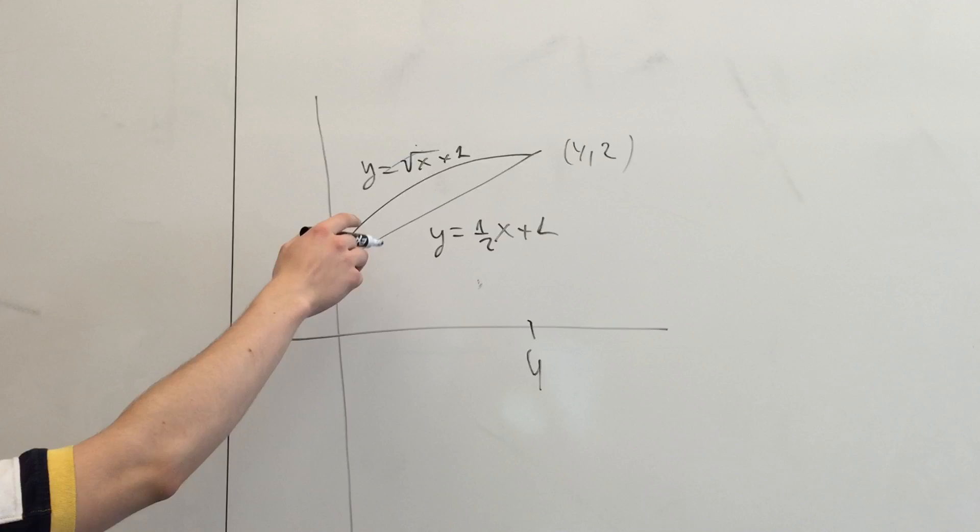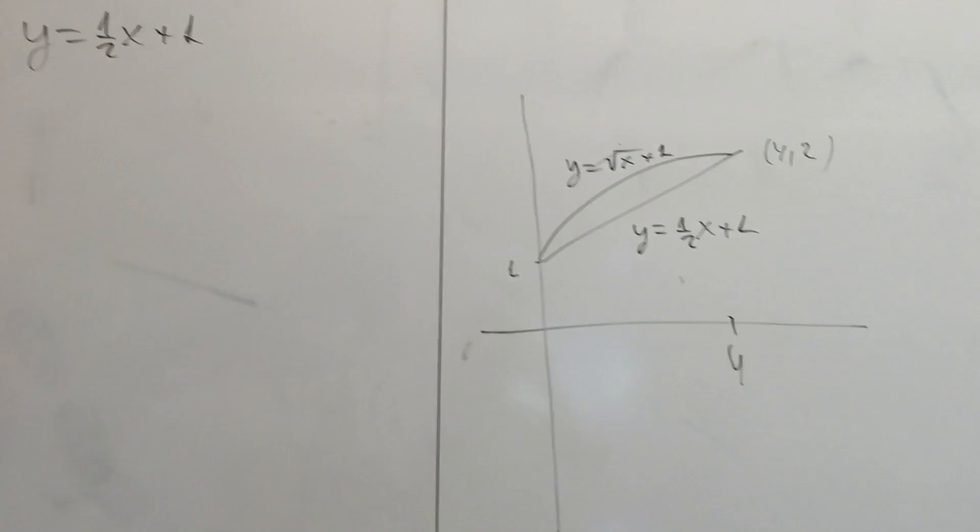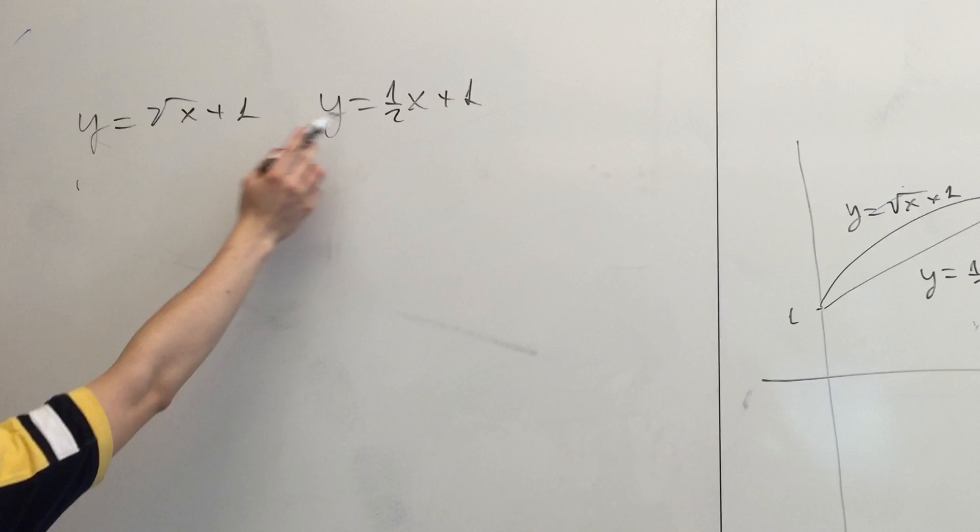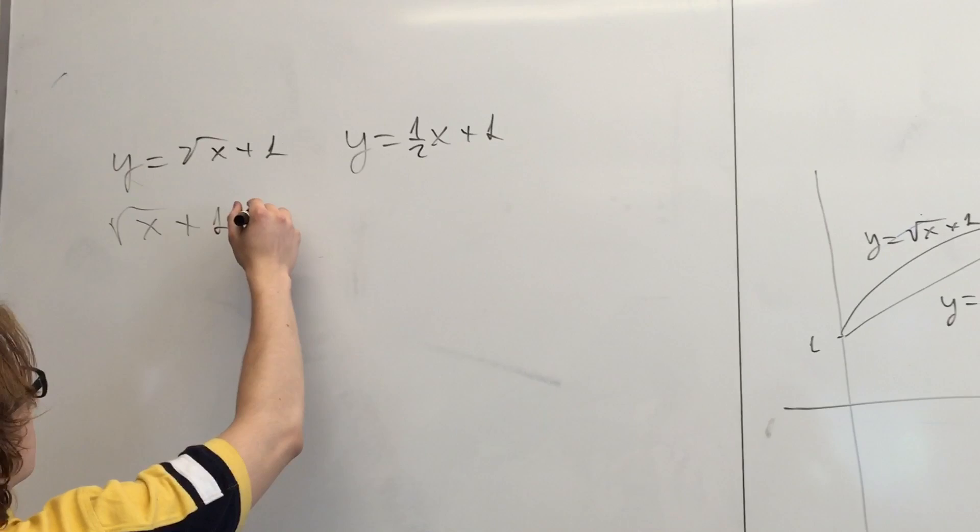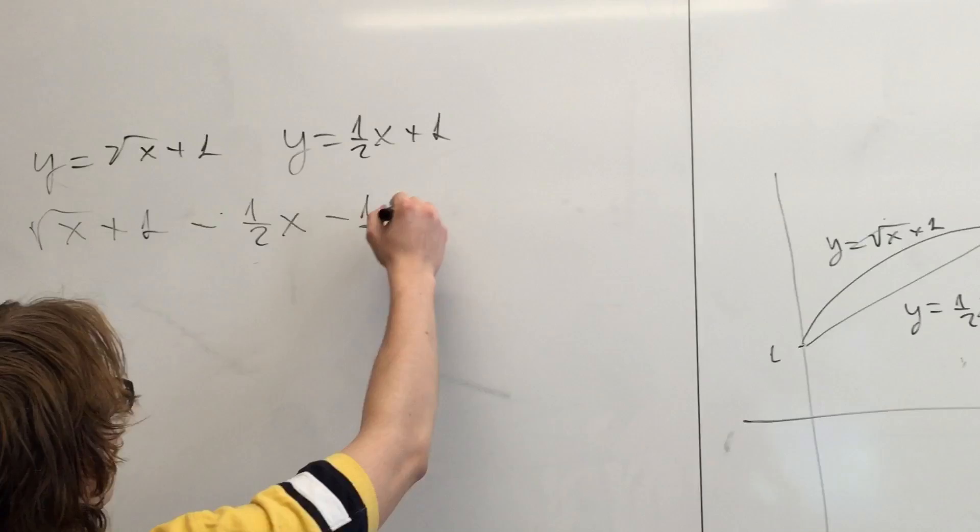So first of all, to subtract one value from the other, we'll subtract this function from this one. So our function, our composite function, will equal √x - (1/2)x.